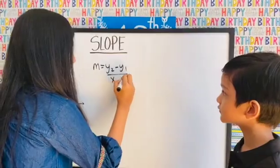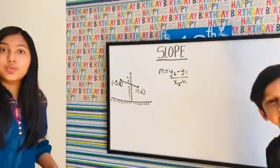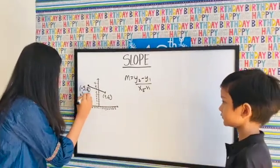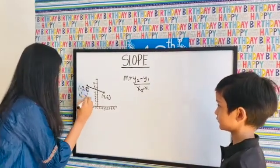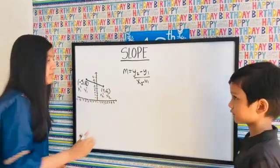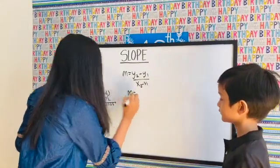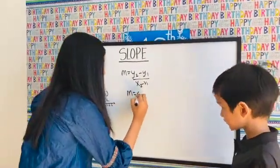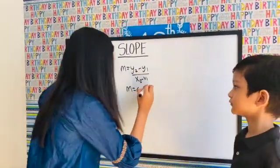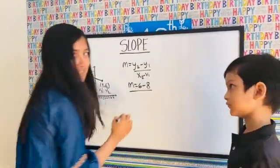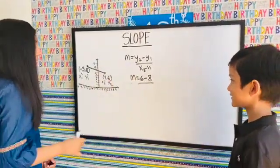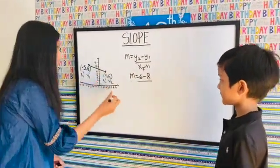But wait, we have to label the points. So this is x1, this is y1, this is x2, and this is y2. So let's label them. m equals y2, which is 6, minus y1, which is 8. This is gonna be tricky. x2 we know is just 4.